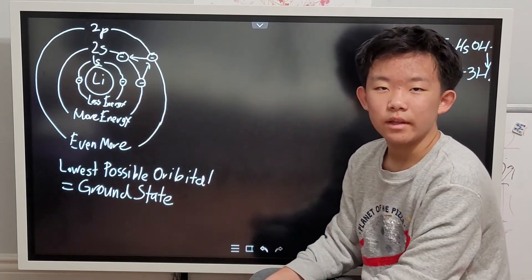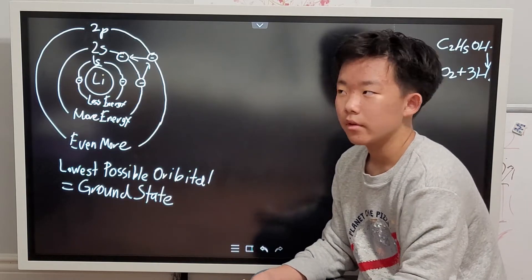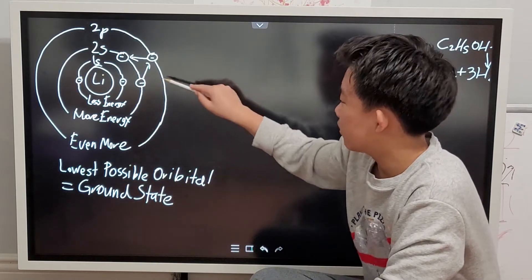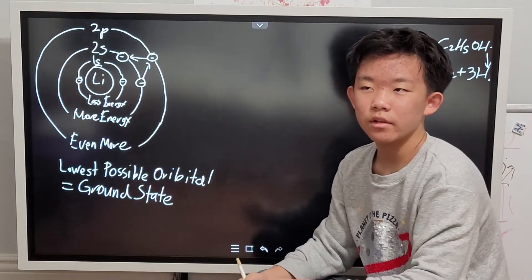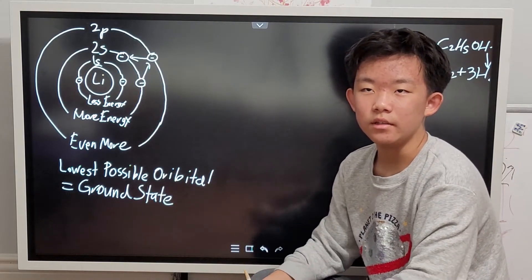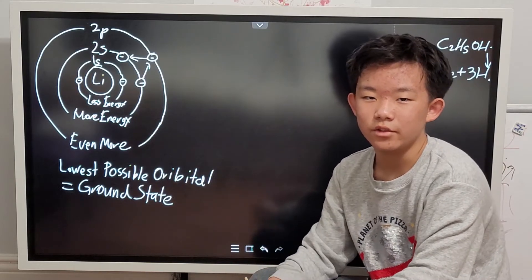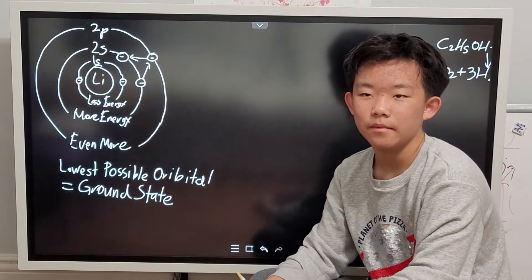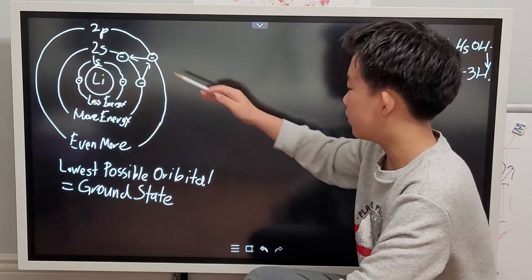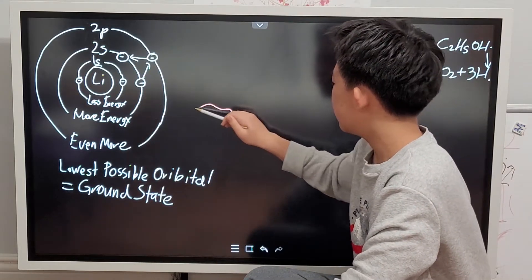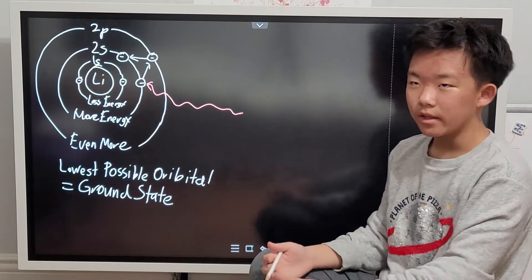So we have this electron here — we're going to focus on this one. We're going to need heat to move it to a higher orbital. Heat is something called thermal energy, and because it's energy, it'll move the electron into a higher energy orbital. The heat from the fire will excite that electron.